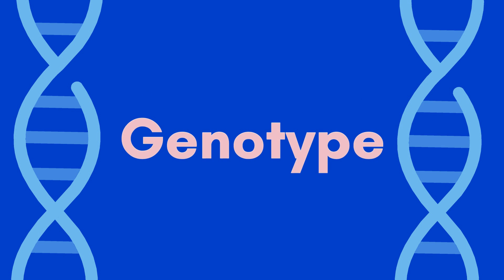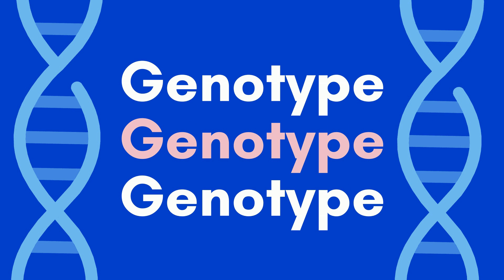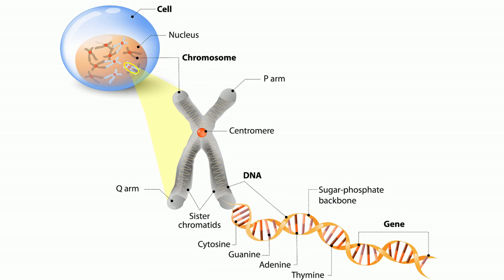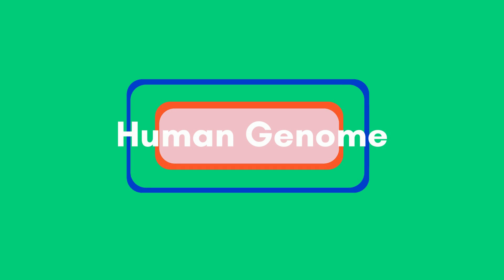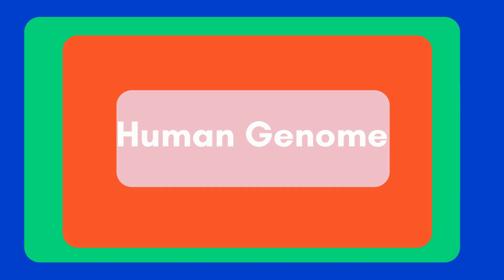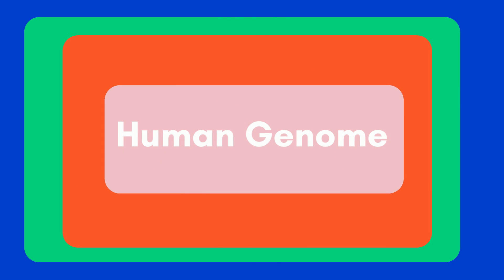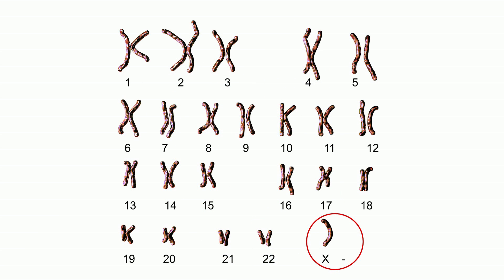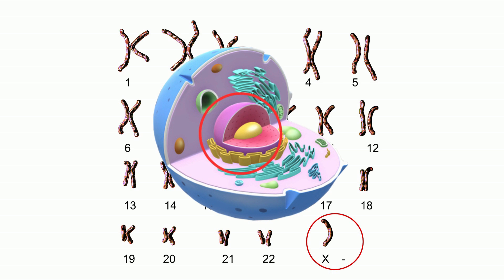In a broad sense, the term genotype refers to the genetic makeup of an organism. It describes an organism's complete set of genes called the genome. The human genome is made up of approximately 3 billion base pairs of DNA and contains about 20 to 25,000 genes. The human genome is organized into 23 pairs of chromosomes, which are located in the nucleus of each cell.